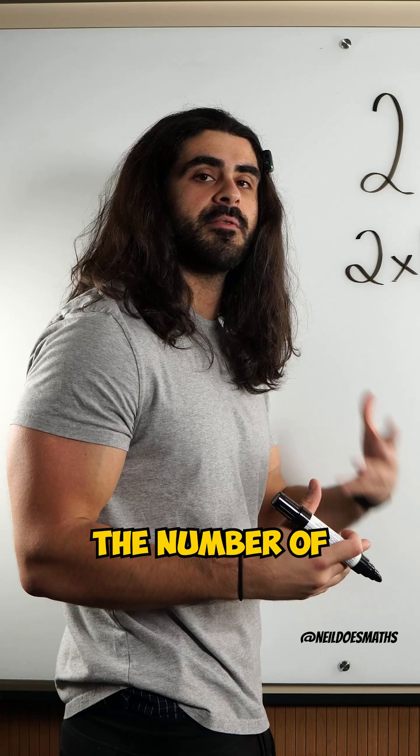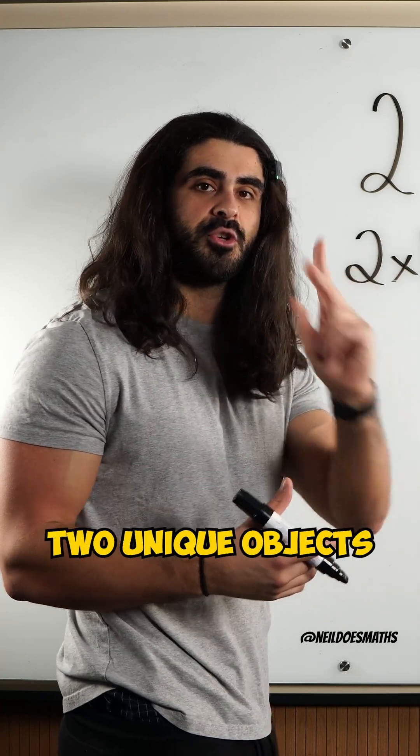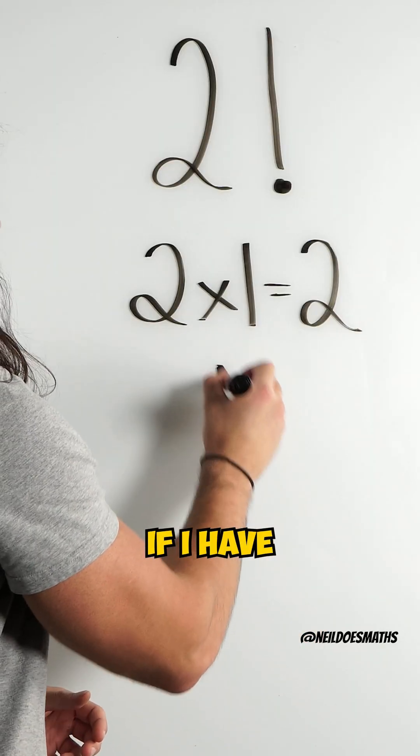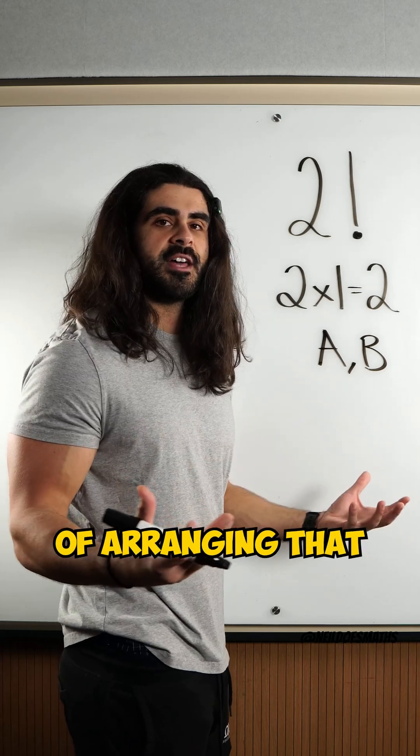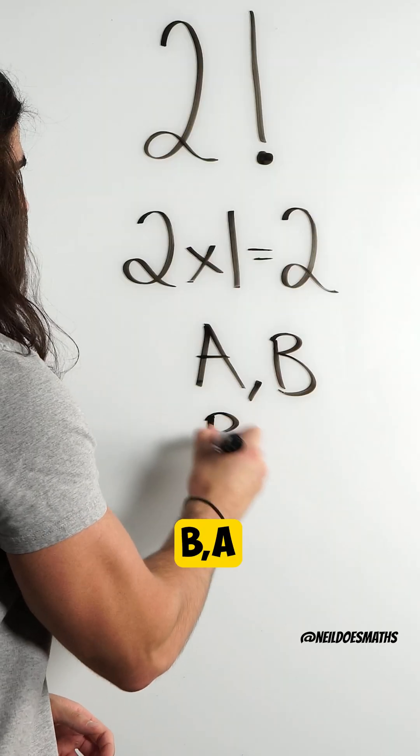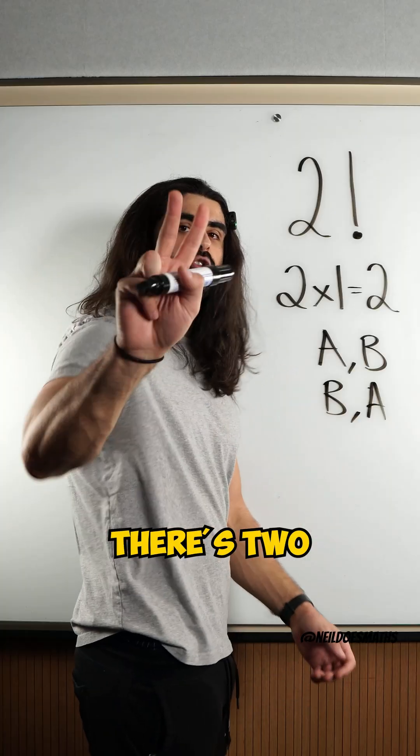Now this tells us the number of different ways of arranging two unique objects. For example, if I have the letters A, B, what's the other way of arranging that? You can only have B, A. There's two different arrangements.